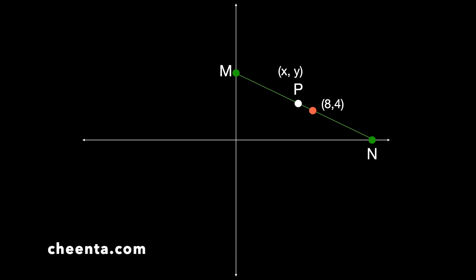Suppose the coordinate of P is (X, Y). A little bit of coordinate geometry will tell you that the coordinate of M is (0, 2Y) and the coordinate of N is (2X, 0) — since P at (X, Y) is the midpoint of MN.